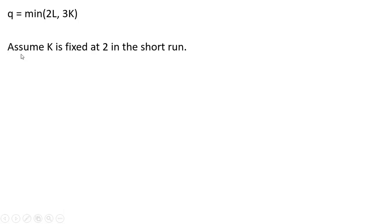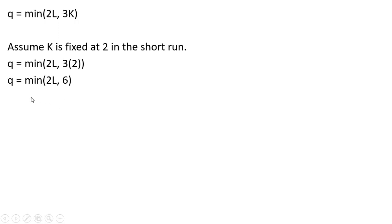Since this is the short run, we're going to assume K is fixed at 2. Plugging 2 into the production function for K and simplifying — 3 times 2 is 6 — our short-run production function with fixed proportions is: output is the minimum of 2L or 6.